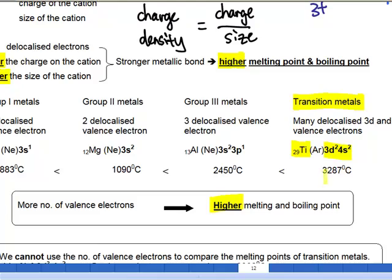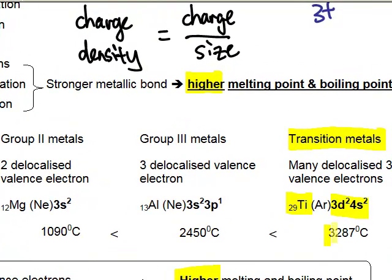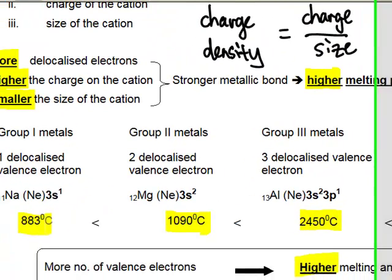So when I have 4 valence electrons, you can see that the boiling point is much higher than the rest of the metals.